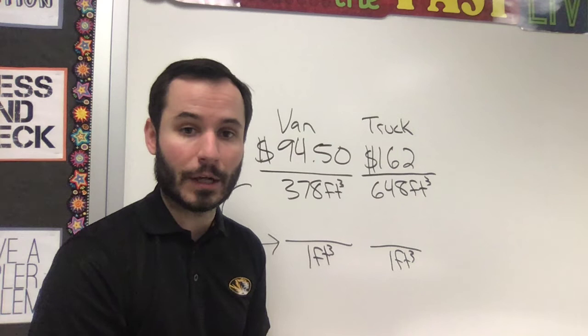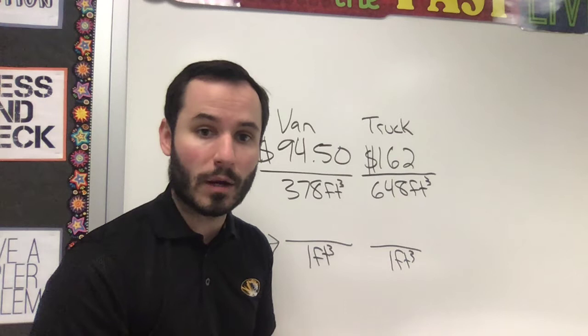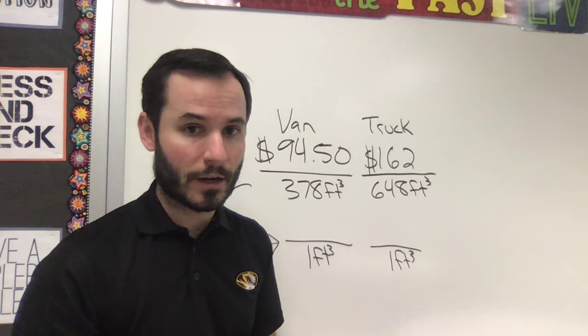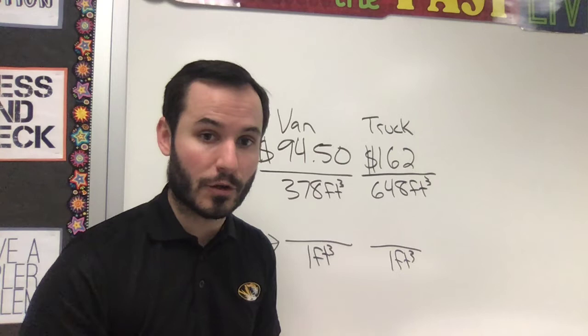Think about it this way: if you were shopping and saw a sale on shoes — you could buy one pair for $20, or two pairs for $30. Two pairs is more than one, and it's more money, but do the math: one pair at $20 is $20 per pair, but two for $30 is $15 per pair. That's a better deal. You're still spending more, but you're getting more, and one pair is cheaper when you do it that way.